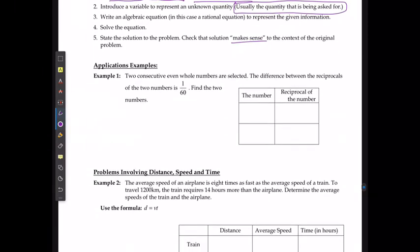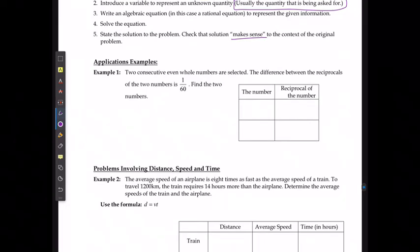For the first example, two consecutive even whole numbers, the difference between the reciprocals of the two numbers is 1 over 60. Find the two numbers. We have a couple of terms we need to use here. We're going to use consecutive, which means they come one after another. They're even, and they have to be whole numbers.